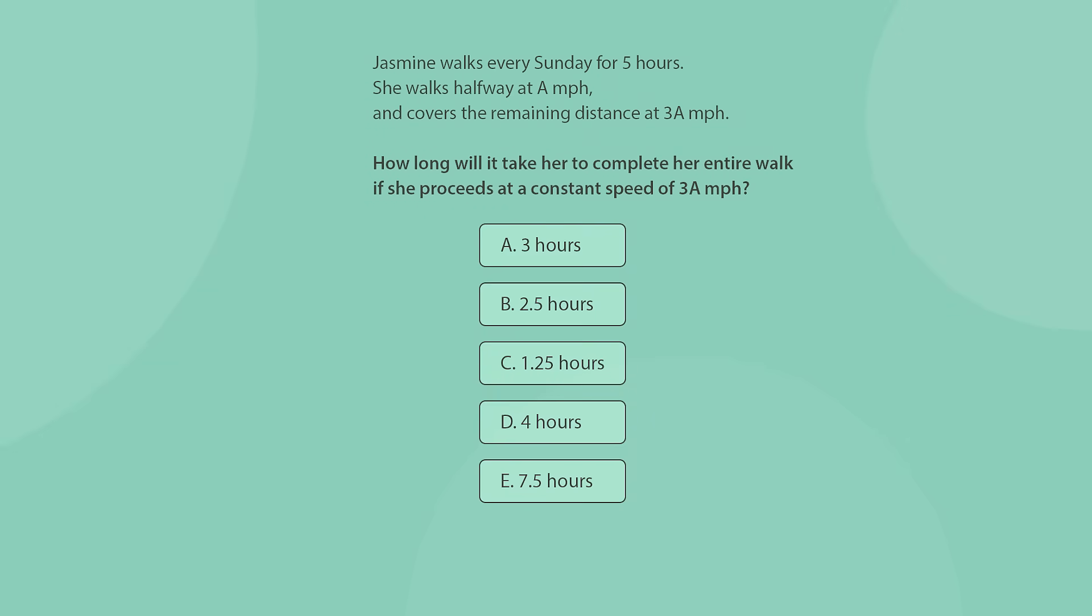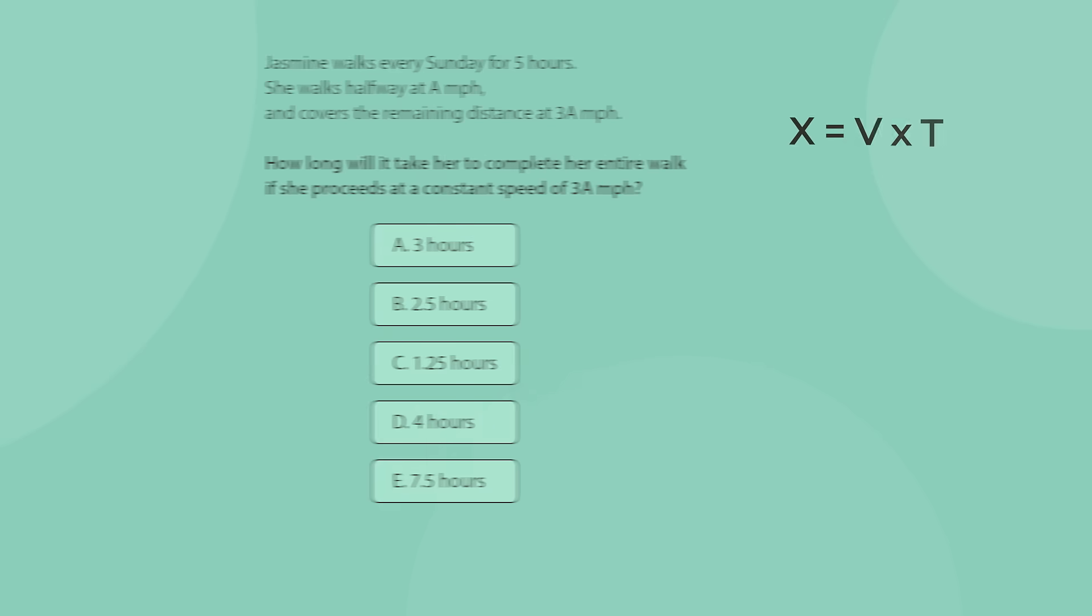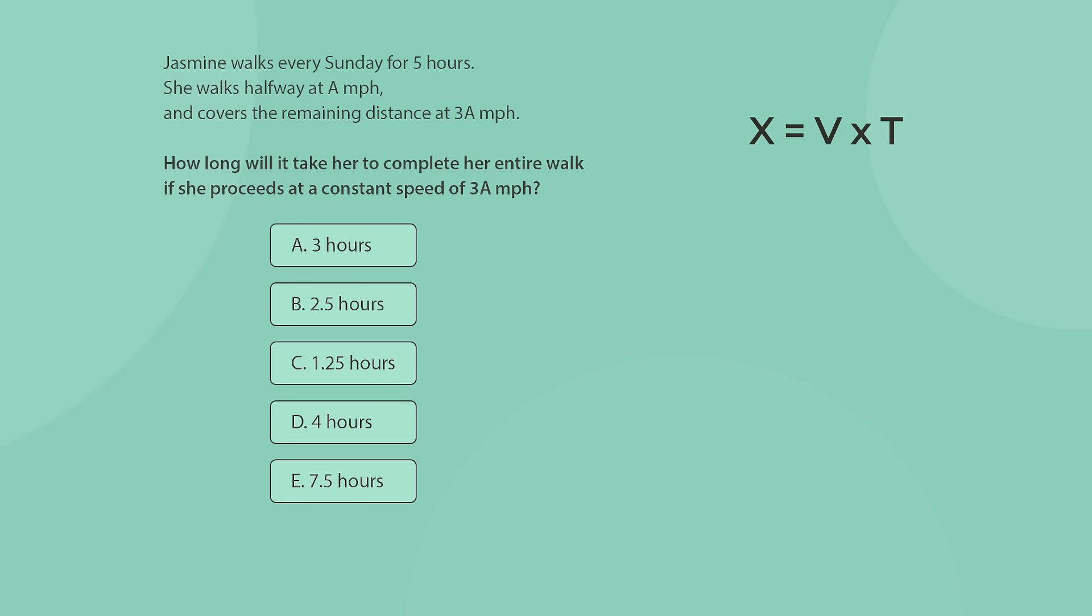This question belongs to a very well known type of word problems, travel problems. Now what most people do when they encounter such a problem is the way they did it at school. Formulate the equations based on the x equals v times t formula, solve, and find the solution. You can go ahead and do that in this question as well, ending up with two equations in two variables. But that kind of calculation requires time, a lot of time.